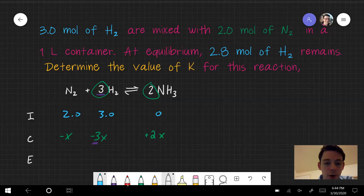Our final row is just going to be the sum of the previous two rows. So for N2 that is 2 minus x, for H2 that is 3 minus 3x, and for NH3 it is just 2x.